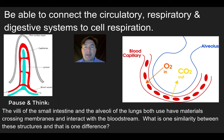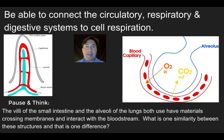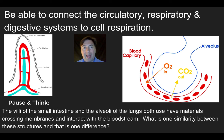A key difference is directionality. In the alveoli, materials move in both directions — oxygen enters the bloodstream and CO2 leaves it. But in the villi, materials only enter the bloodstream: glucose, fatty acids, glycerol, and other digested subunits cross into the capillaries. Materials do not diffuse back out of those capillaries into the small intestine — it's a one-direction flow.